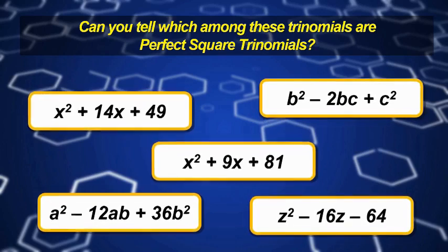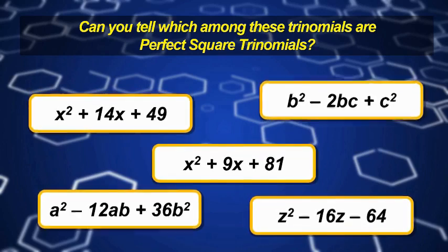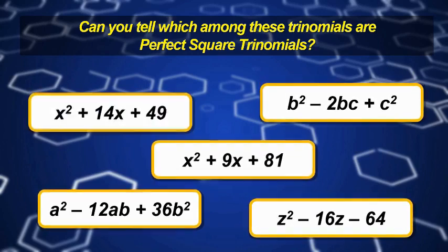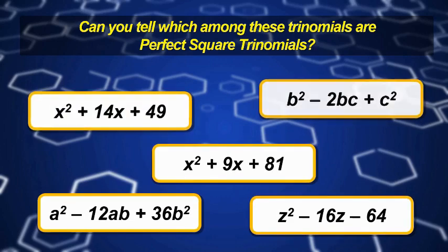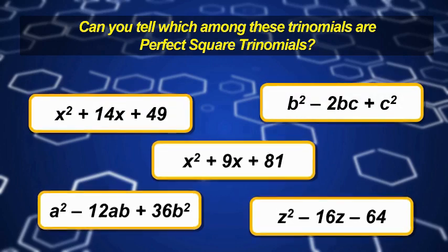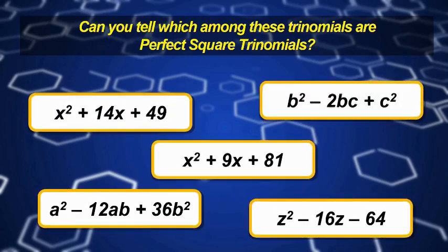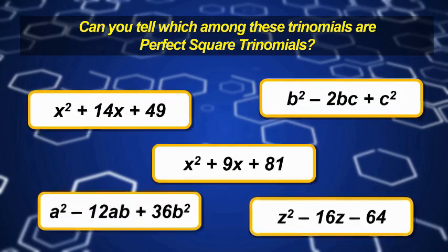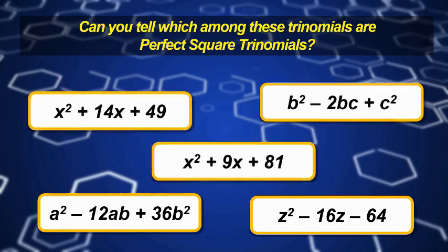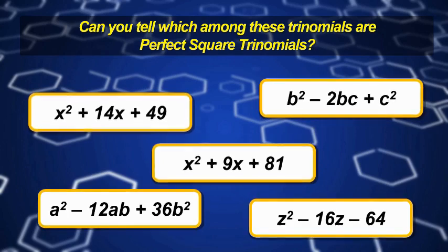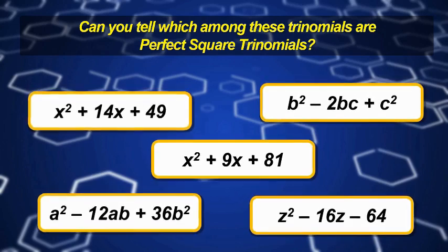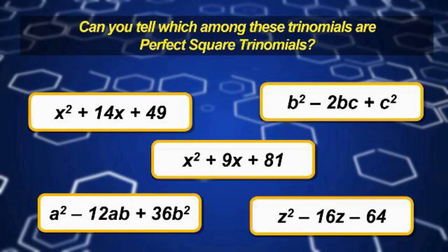x squared plus 14x plus 49, b squared minus 2bc plus c squared, and a squared minus 12ab plus 36b squared are all perfect square trinomials.